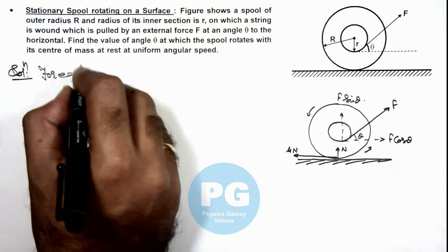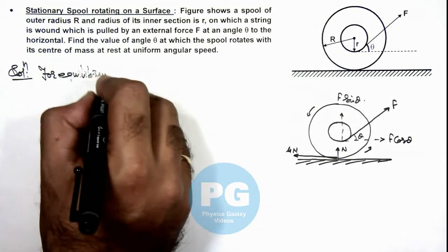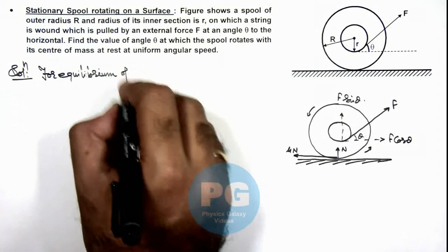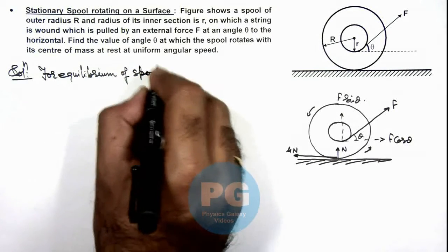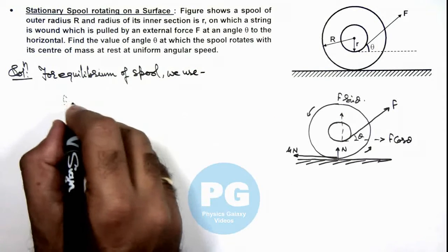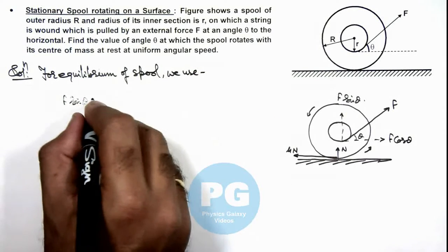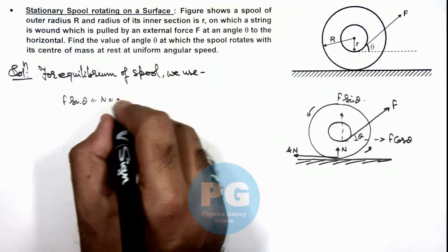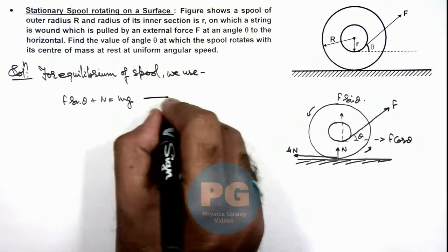Now in this situation we can write for equilibrium of spool. Here we use, we are having in vertical direction F sin theta plus N should be equal to mg and that is say first equation.